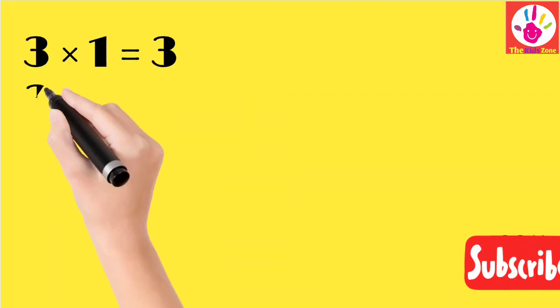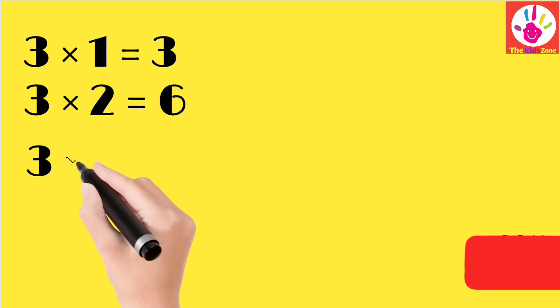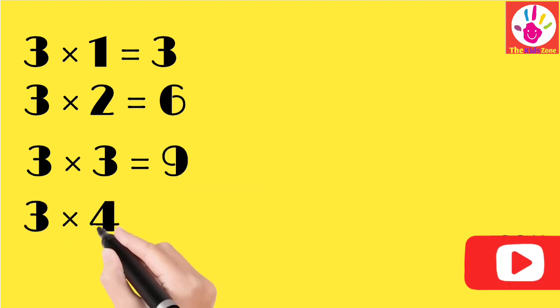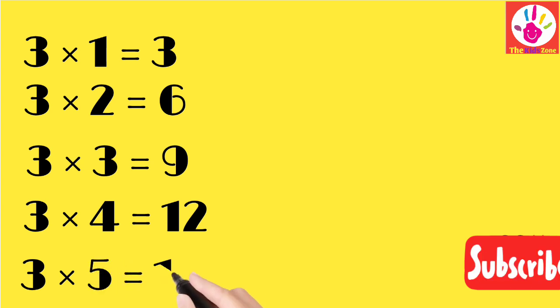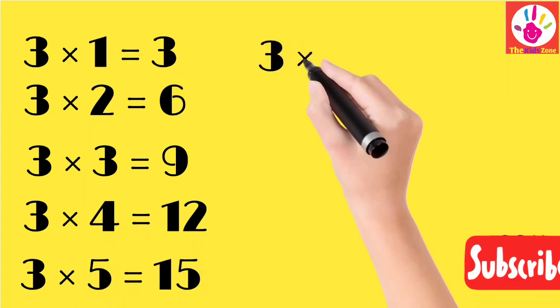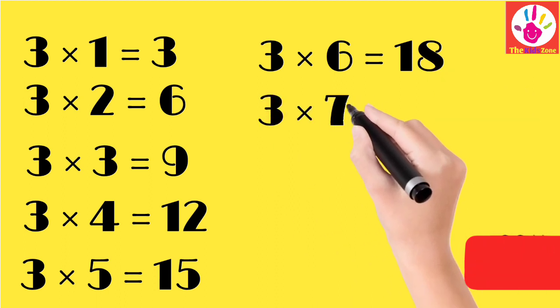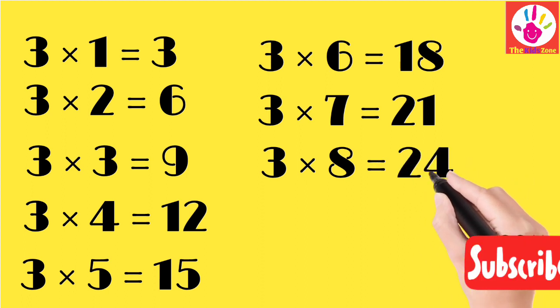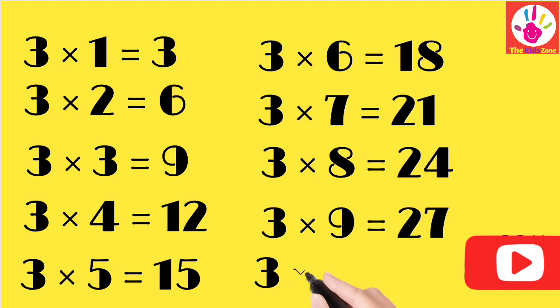Table 3: 3 ones are 3, 3 twos are 6, 3 threes are 9, 3 fours are 12, 3 fives are 15, 3 sixes are 18, 3 sevens are 21, 3 eights are 24, 3 nines are 27, 3 tens are 30.